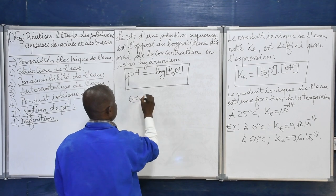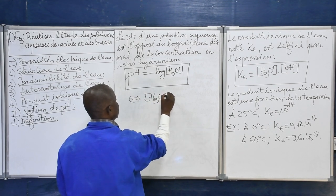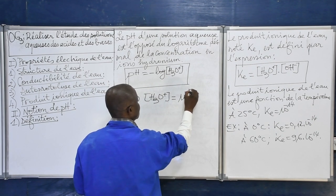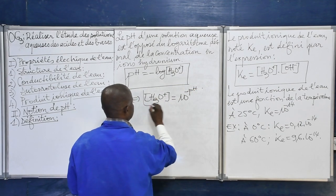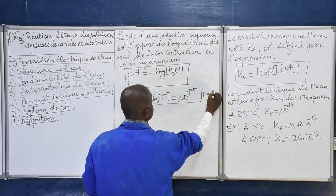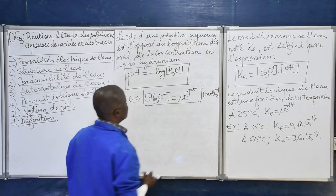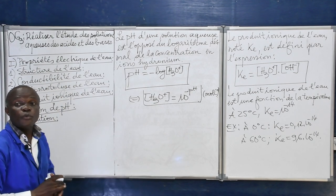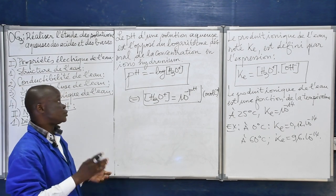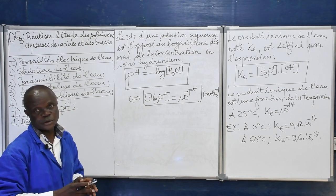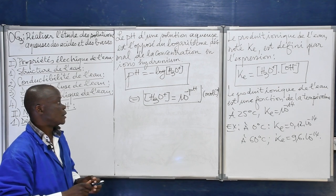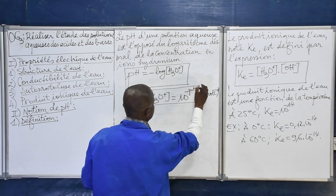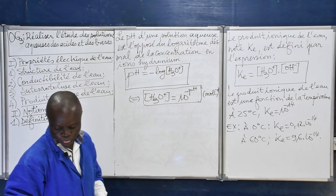Ceci est équivalent à : si on connaît le pH, on peut aussi déduire la concentration en ion hydronium : [H₃O⁺] = 10⁻ᵖᴴ, la concentration en mol par litre. Connaissant le pH, on peut déduire la concentration en ion hydronium de la solution.